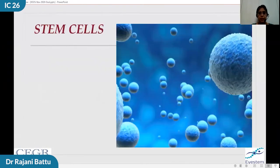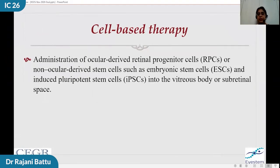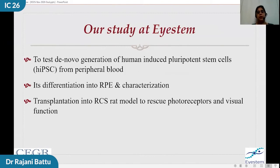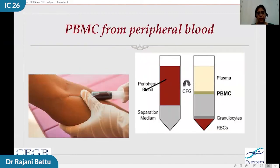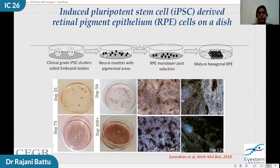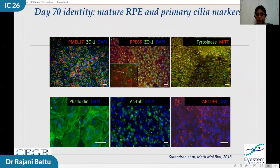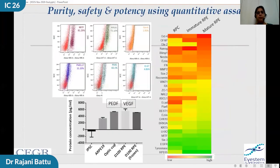Stem cells involve administration of cells procured from embryonic stem cells or induced pluripotent stem cells. iPSC was first developed by Professor Yamanaka, for which he received the Nobel Prize. A company called iSTEM was formed about four years ago, with main work in retinal stem cells. In one study, peripheral blood was obtained and converted to PBMCs or mononuclear cells, from which cells go through a process to form mature hexagonal retinal pigment epithelium. Immunohistochemistry markers show that the cells obtained are indeed retinal pigment epithelium, functional, nearly mature, and a pure population.